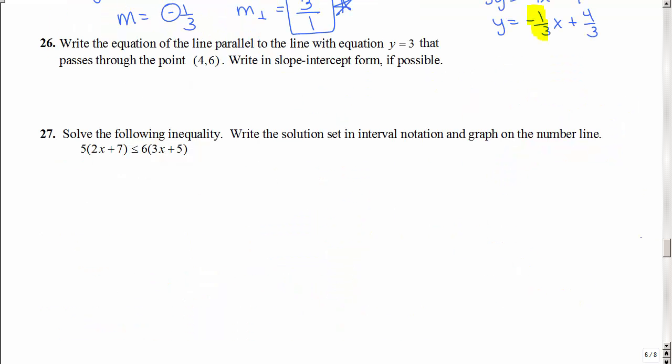26. Write the equation of the line now that's parallel to this line that passes through this point. Well, you have to know that y equals to 3 is a horizontal line. And so something parallel to it is another horizontal line. So I know it's going to be y equals 2. And what is y equal to? 6. Yes, it's that easy. What if the problem said x equals to 3, had everything else that said x equals to 3? Well, you would need to know that x equals to 3 is a vertical line. And so something parallel to it would be another vertical line. And what does x equal to? 4. So simple, not really any work to show. You just have to know these things.